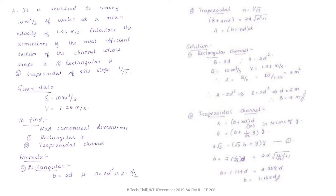What are the given data here? They have given 10 m³ per second, so that is discharge: Q = 10 m³ per second. It is having a mean velocity of 1.25 m per second, so V = 1.25 m per second.